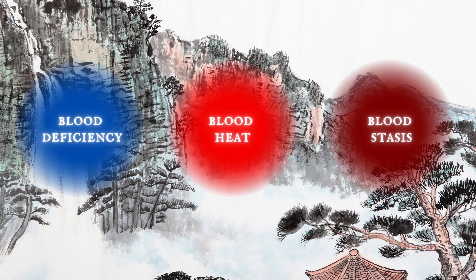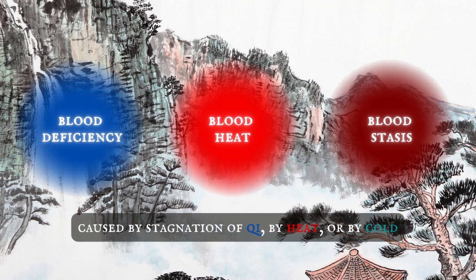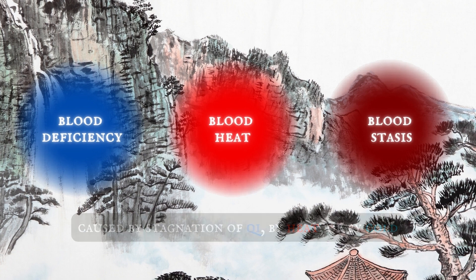Finally, blood stasis. Blood can fail to move properly and stagnate. This may be caused by stagnation of qi, by heat, or by cold. And blood stasis often causes pain.